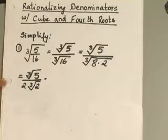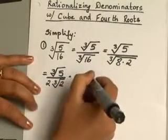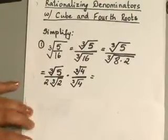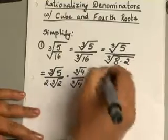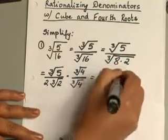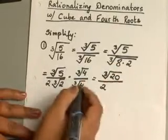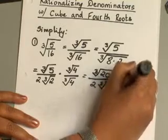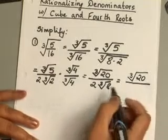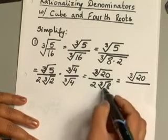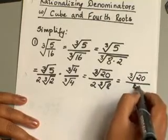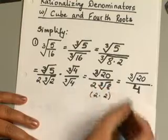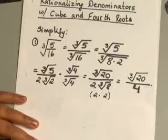Coming back to our original example, we need to multiply by cube root of 4. Remember, when multiplying radicals they must have the same index. So 5 times 4 gives you 20 in the numerator, and 4 times 2 gives you 8 in the denominator. Cube root of 20 cannot be simplified further. Cube root of 8 is 2, so 2 times 2 gives you 4. Your final answer is cube root of 20 over 4.